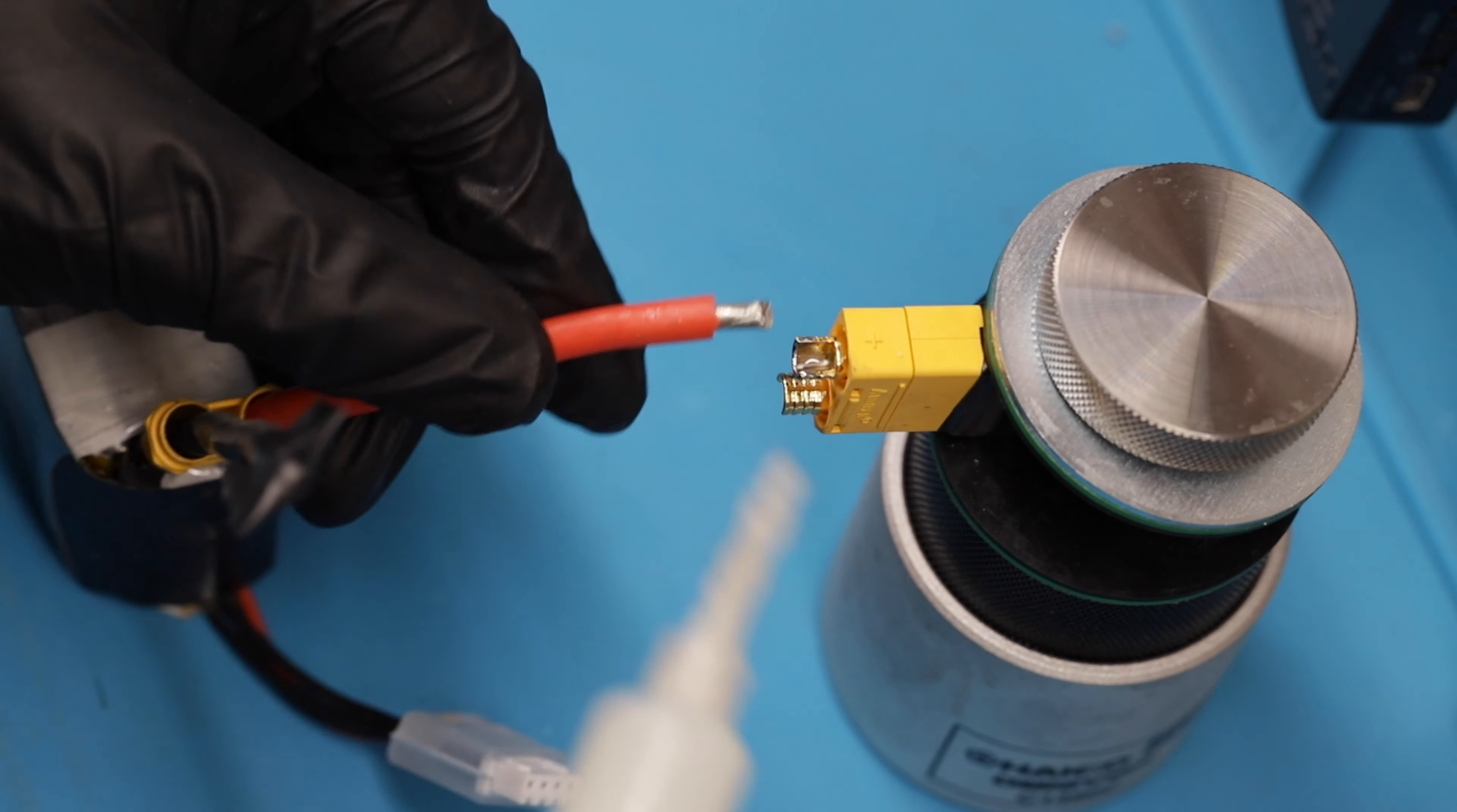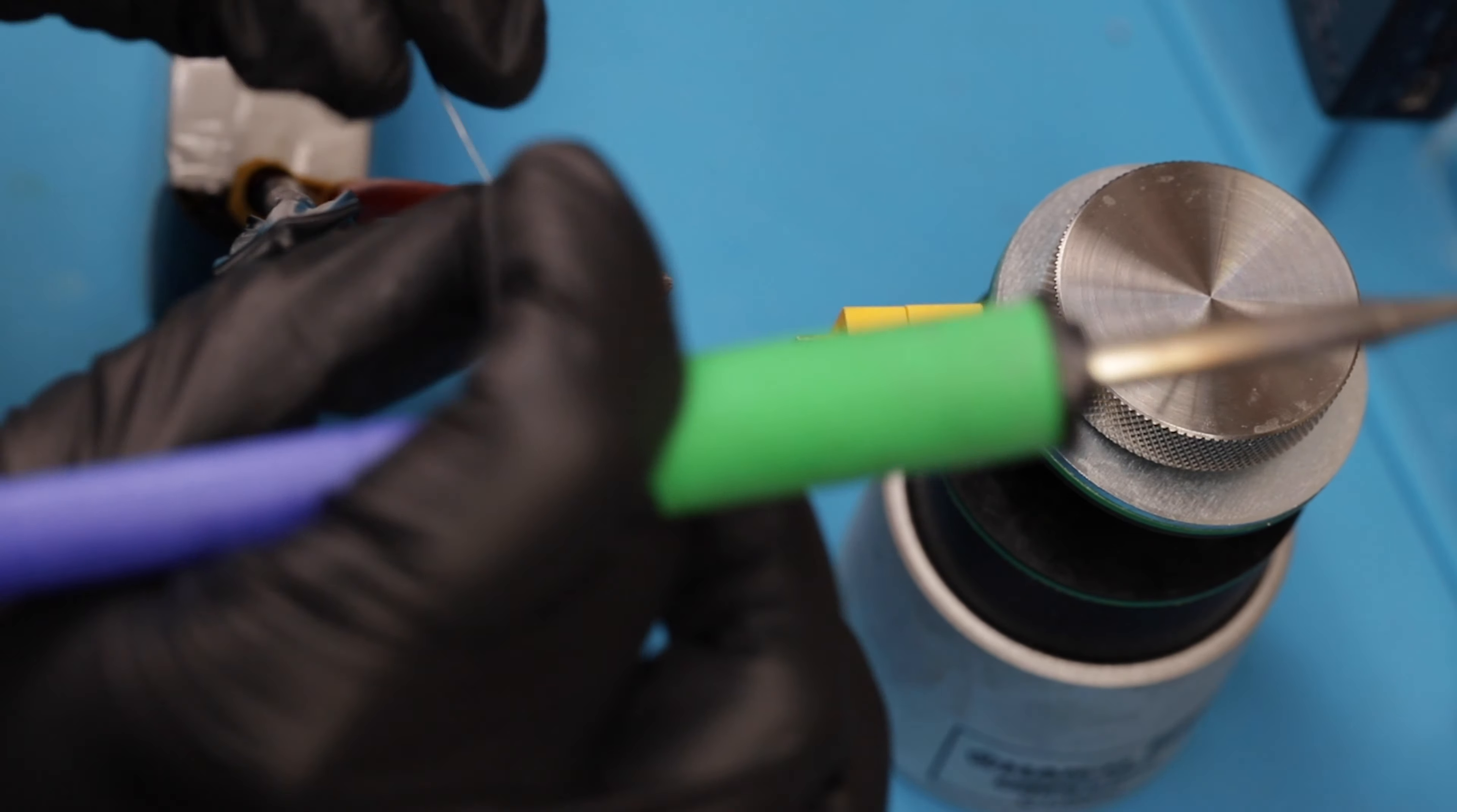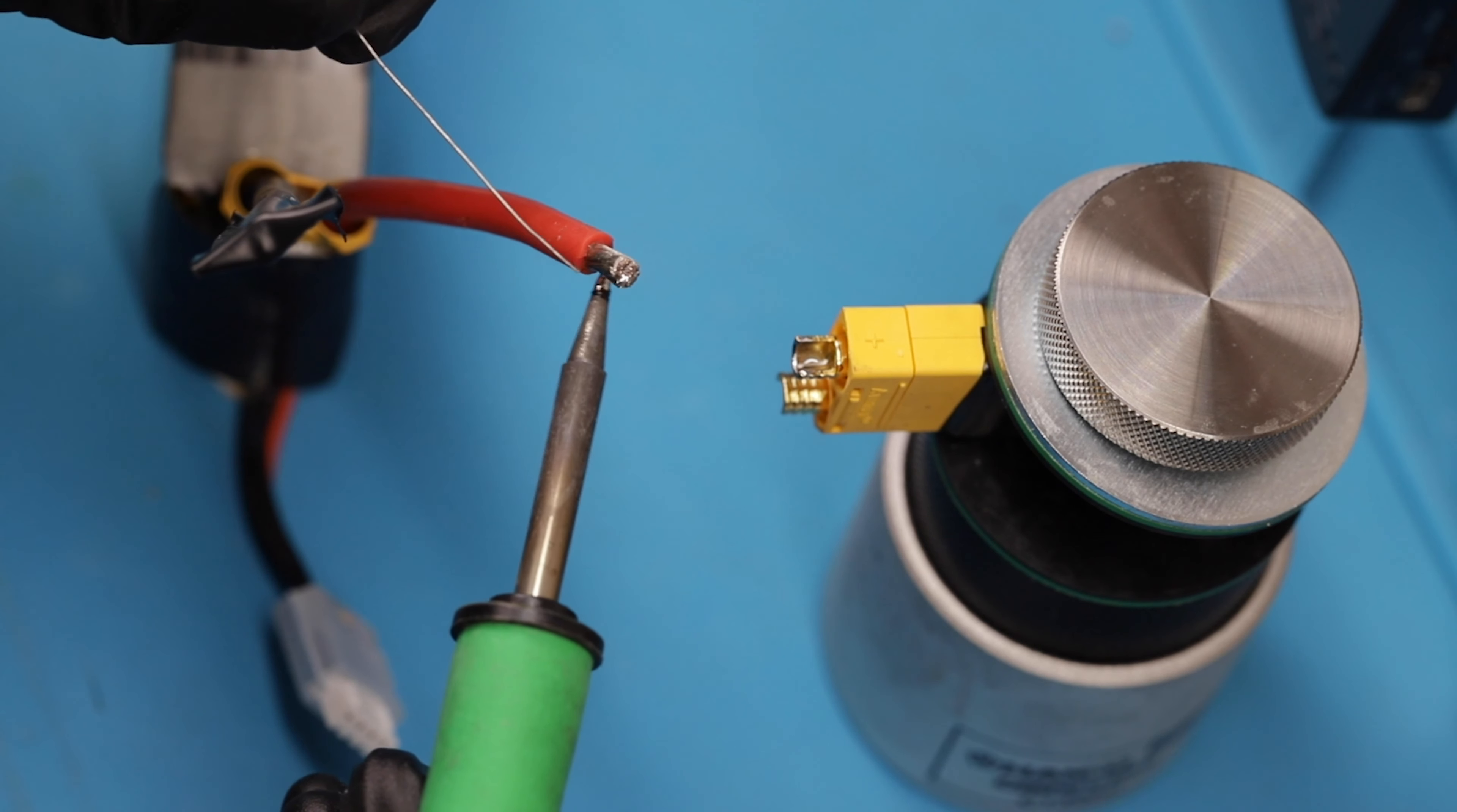Next we'll prep the cable. Put a little bit of flux on it just like we did on the terminal. And for the cable I actually like to heat from the bottom. Feed the solder from the bottom. And what happens is that cable actually sucks it up. The flux helps it flow into the cable. That way you get the whole cable saturated with solder. See it sucked all that up right to the center of that cable. And this way we make sure the bottom of this cable is prepped for the terminal as well.